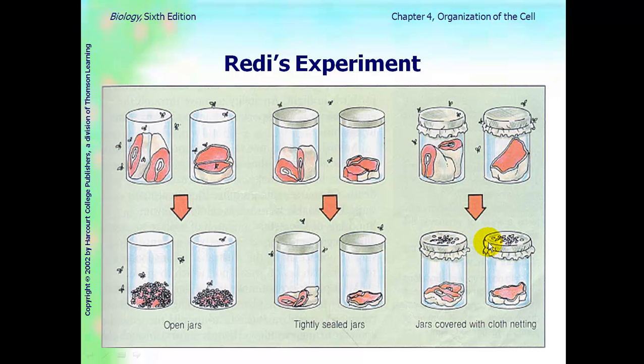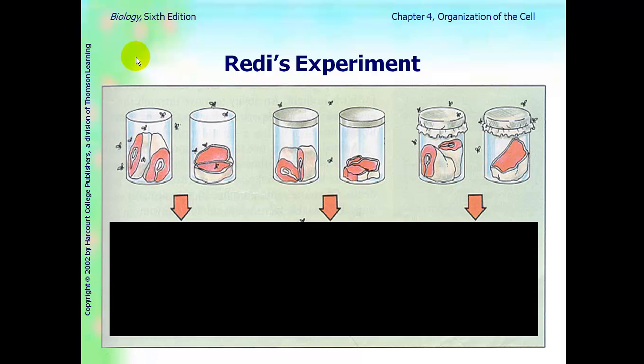So if the Spontaneous Generation Theory was true, that life comes from non-living things, such as maggots come from meat, which people believed back in the day, then there would have been maggots inside this jar. But there was not. So Francisco Reddy actually proved a theory wrong.